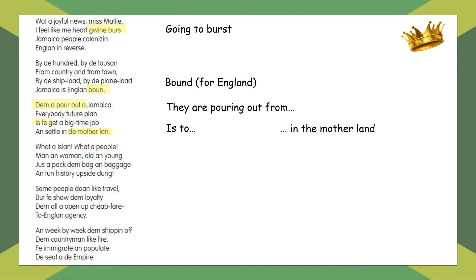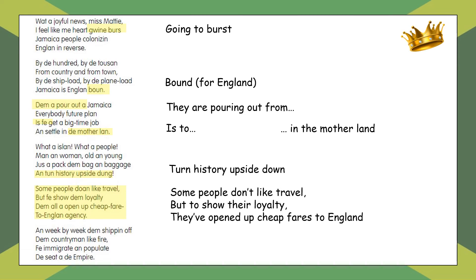The 'motherland' is what England was referred to in the British Empire — but there is a question of whether England was truly a mother to Jamaica given how horribly it treated Jamaica during historical colonisation. We then have 'What an island, what a people, man and woman, old and young, just pack their bag and baggage and turn history upside down' — people are so excited, packing their bags, reversing history, though the poem asks whether it's so simple to address the historical legacy of colonisation. Even those who don't want to travel are opening up cheap fares to help others get to England.